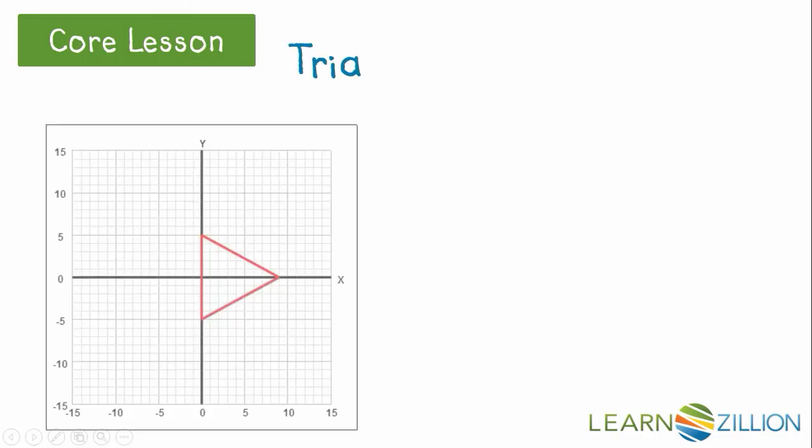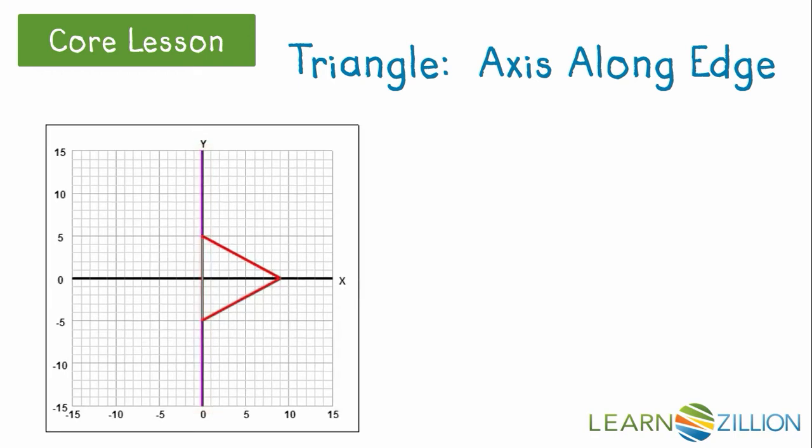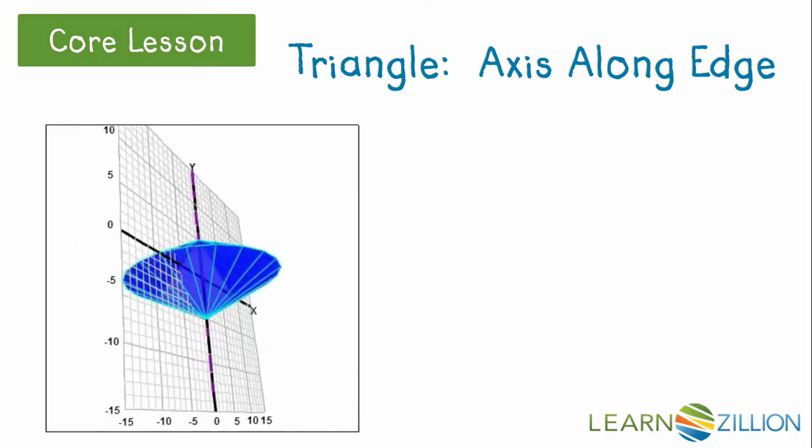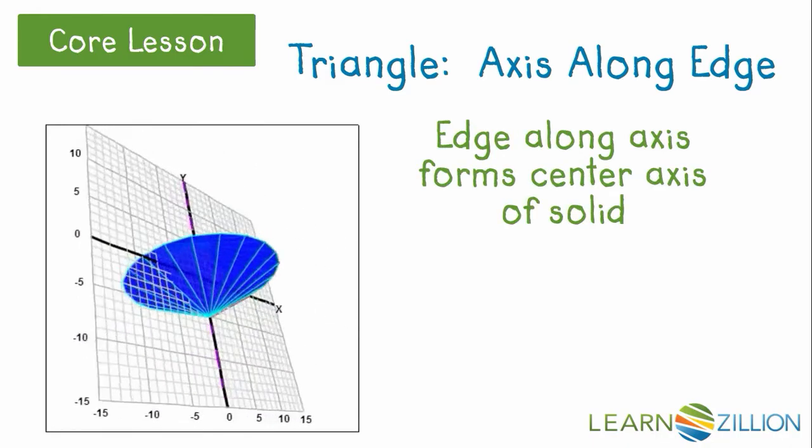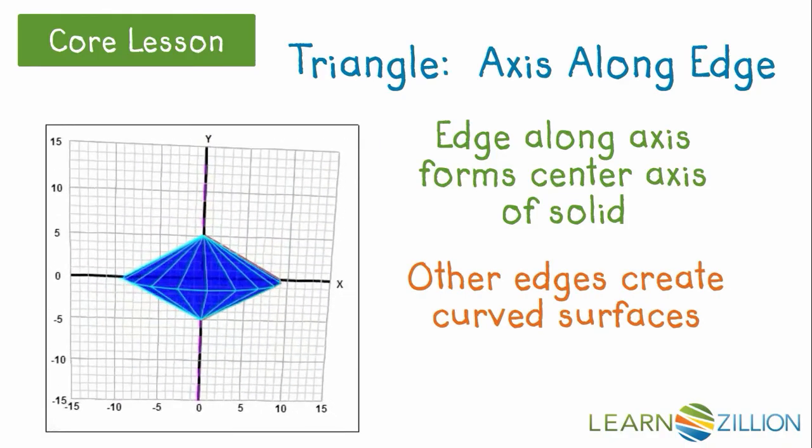If we place the axis along the edge of the triangle, watch what results. The edge that overlaps the axis provides the top and bottom extremes of this solid, and is the axis of the shape. At the same time, as the other two edges rotate, they create curved surfaces pointing away from the axis.